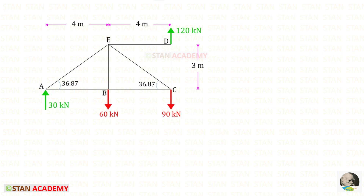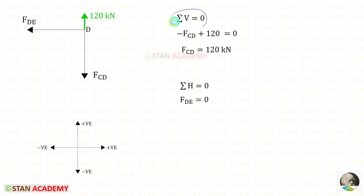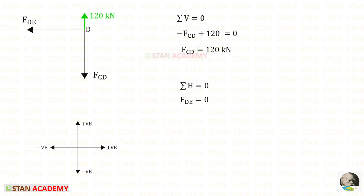Taking joint D to find member forces, applying Sigma V = 0: V_D acts upward (positive) and the downward load is negative, giving F_DC = 120 kN. Applying Sigma H = 0, we find F_DE = 0.